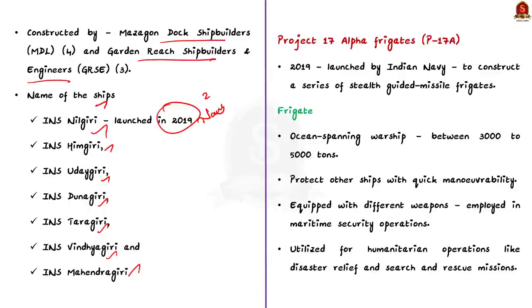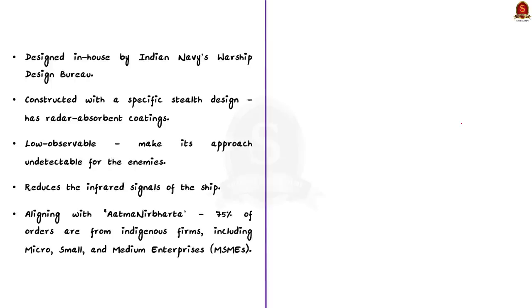Five P-17A project ships have been launched so far between 2019 and 2022. The first stealth ship launched under P-17A was Nilgiri in 2019. Vindhyagiri was launched a few days back and the last ship, Mahendragiri, was launched today. The P-17A ships have been designed indigenously by the Indian Navy's Warship Design Bureau, which is the pioneer organization for all warship design activities.